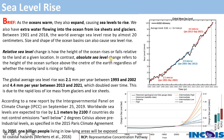In contrast, absolute sea level is the change in the height of the ocean above the center of the earth, irrespective of whether the nearby land is rising or falling. If the height of the ocean — measured from the center of the earth — is changing either up or down, that kind of change is called absolute sea level. You don't consider whether nearby land is rising or falling.